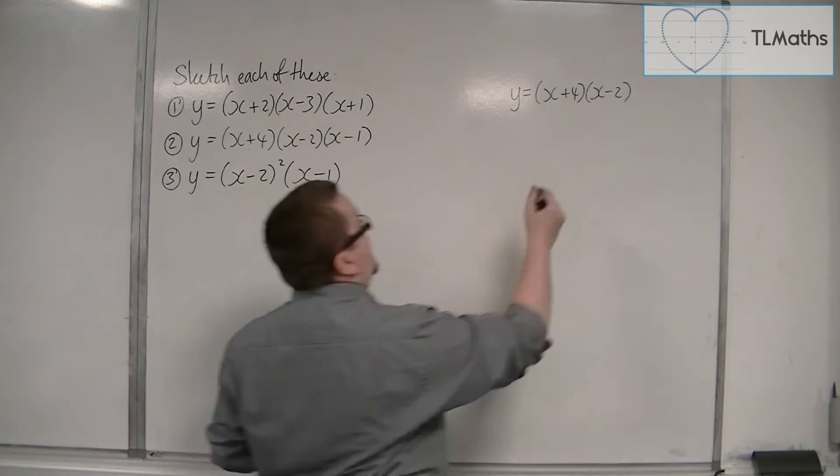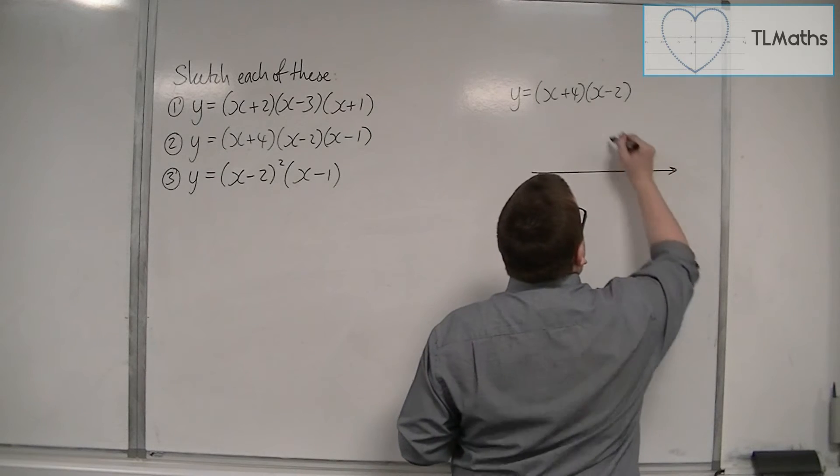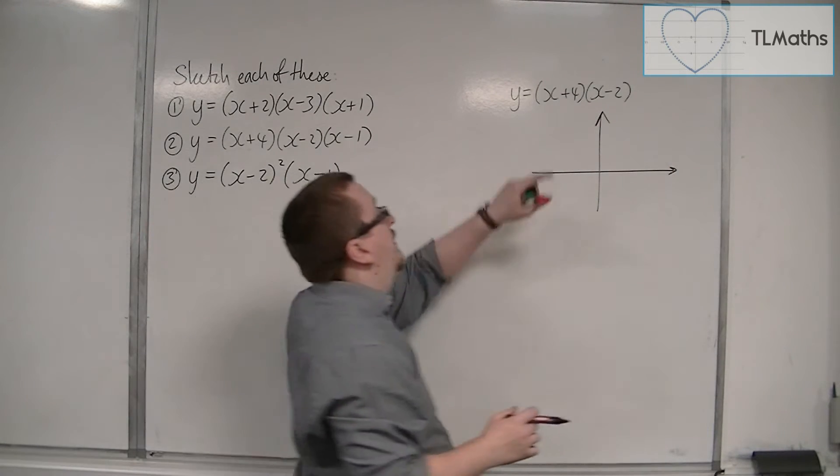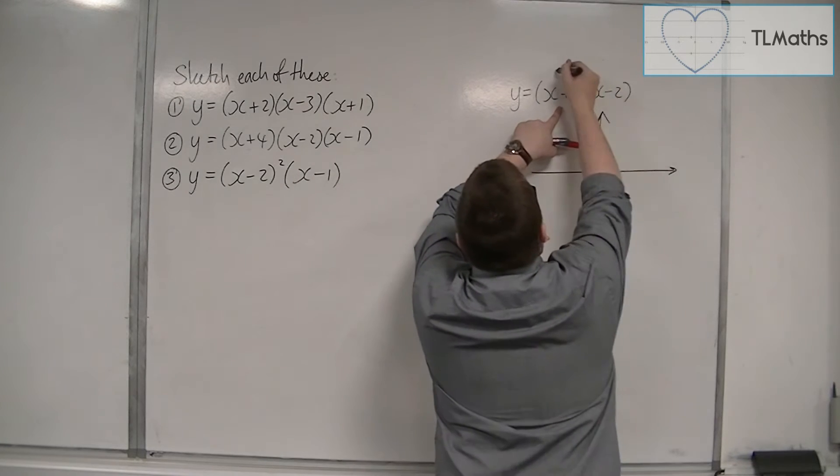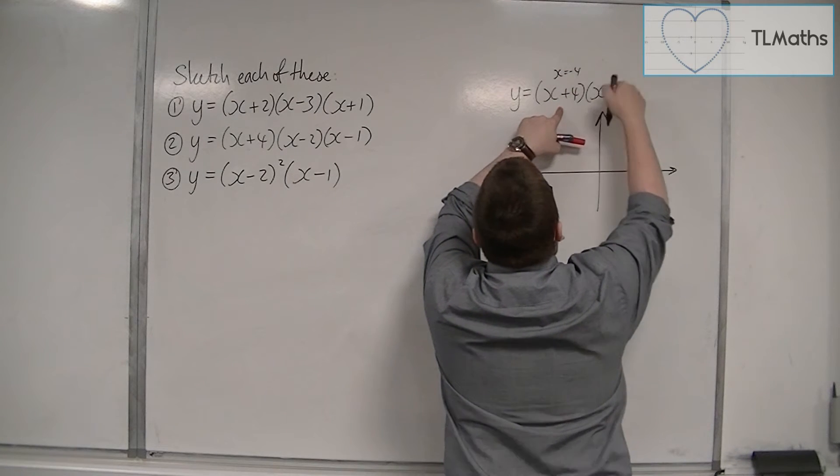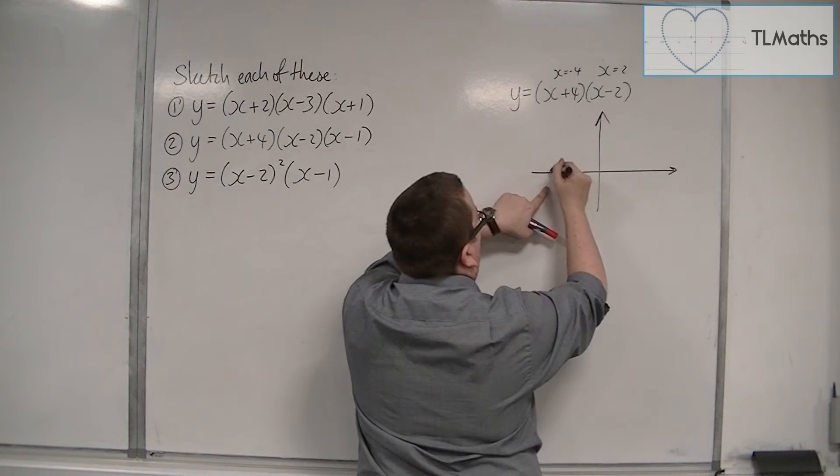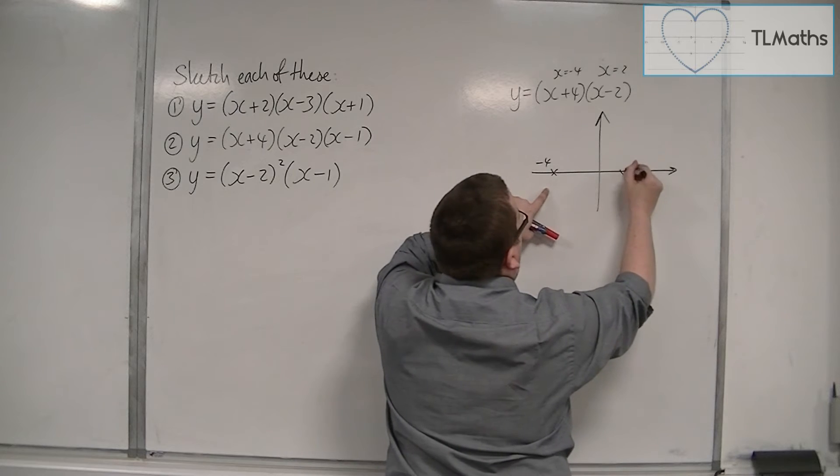Now the first thing that I can identify is where it crosses the x-axis. I can see that it's crossing the x-axis at minus 4 and plus 2.